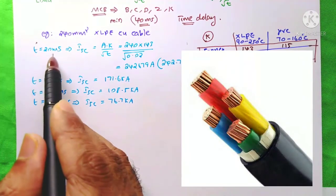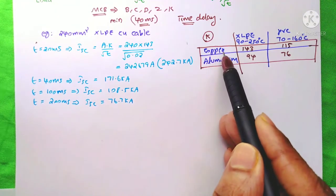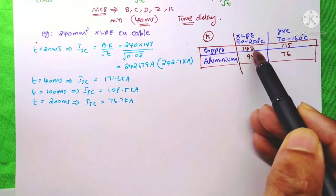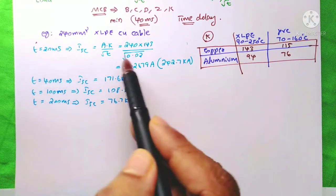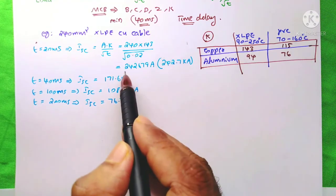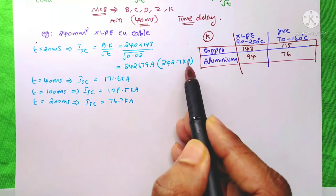When T equals 20 ms, for the constant K for copper cable, if XLPE insulated, K equals 143. 20 ms means 0.02, root of 0.02. So the answer is 242.7 kA.